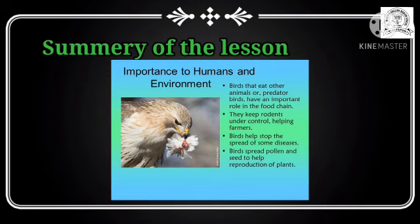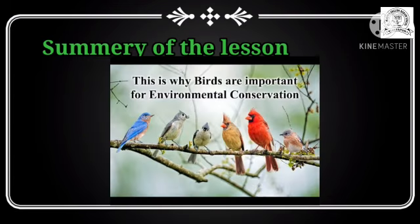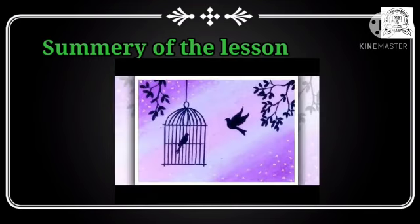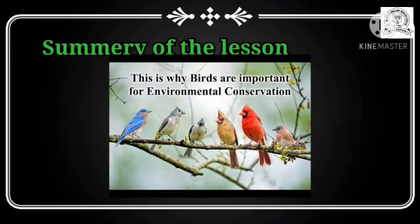Birds are very useful — they give us food as meat and eggs, and they help in pollination. Hummingbirds carry pollen grains while sucking nectar, and parrots spread seeds when they eat fruit. All birds make our world very beautiful, so don't put birds in a cage and never touch birds' nests, eggs, or young ones. Save the birds and save your environment.